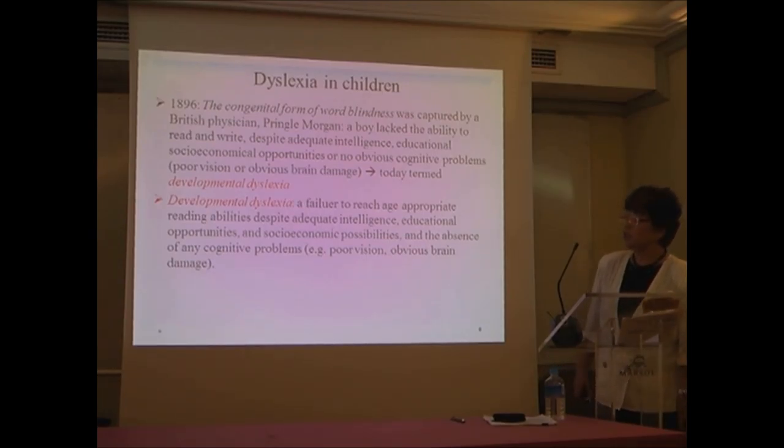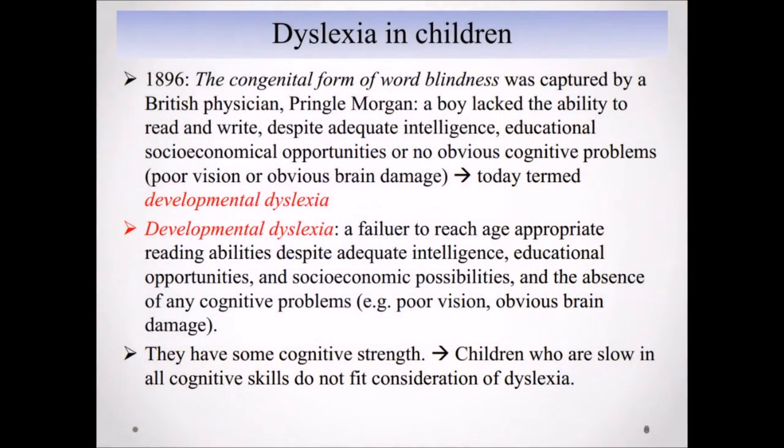Now, developmental dyslexia can be defined as a failure to reach age-appropriate reading abilities despite adequate intelligence, educational opportunities, and socio-economic possibilities, under the absence of any cognitive problems, including poor vision or obvious brain damage. So, fitting into the definition of developmental dyslexia, the people have to have some cognitive strengths. Children who are slow in all cognitive skills do not fit consideration of dyslexia.